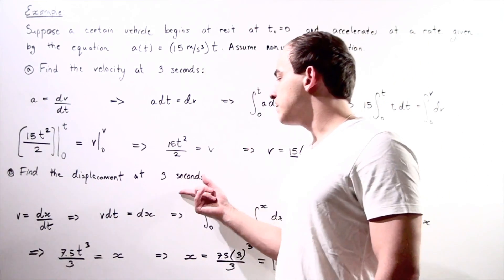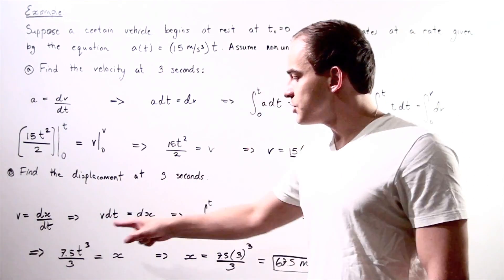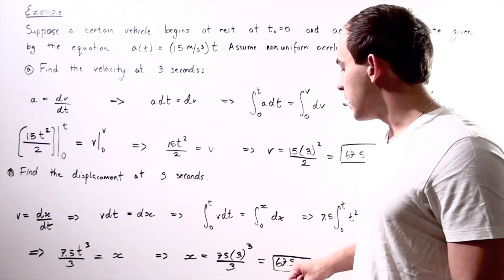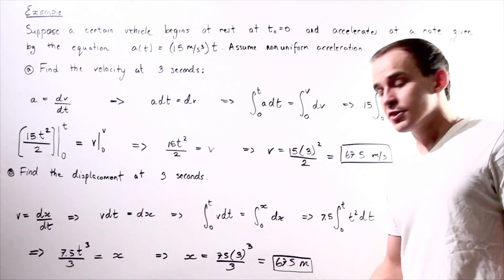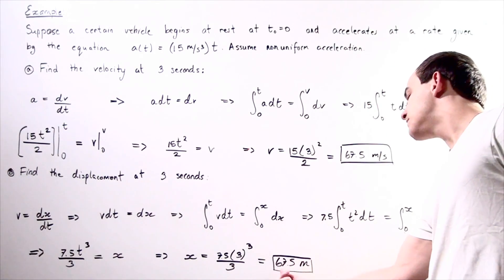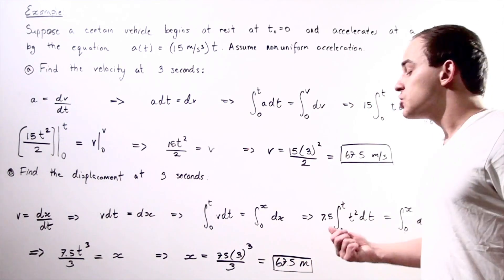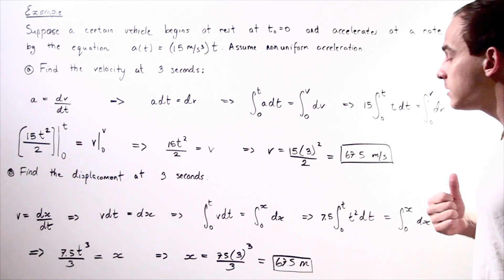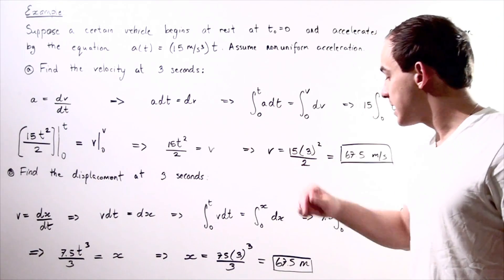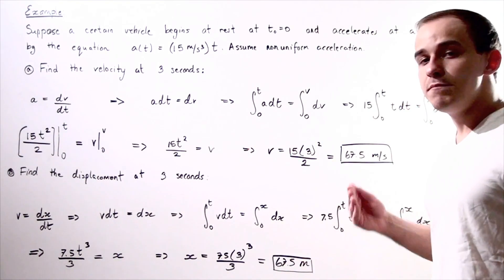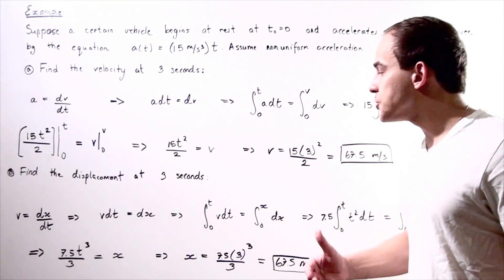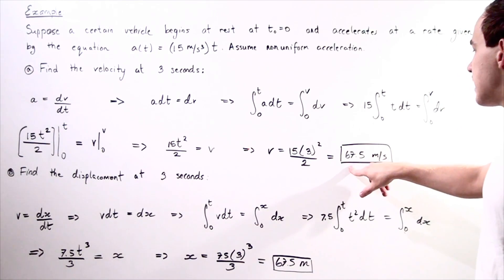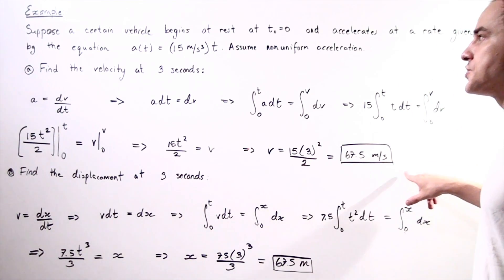Now we can simply plug in three seconds. We get 3 cubed equals 27; 27 multiplied by 7.5 divided by 3 gives us 67.5 meters. So at the three-second mark, our vehicle has displaced 67.5 meters from its initial position, and it has reached a velocity of 67.5 meters per second.